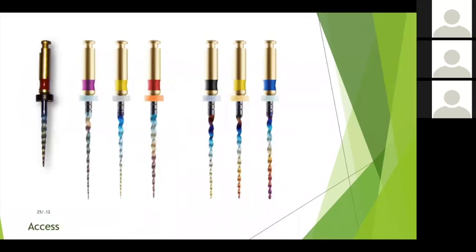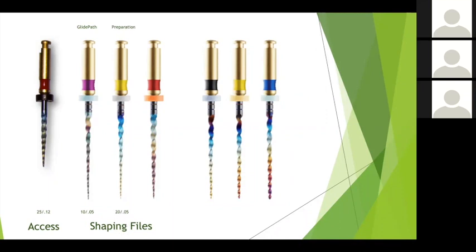The basic file system: the orifice opener is a 25, 12 used in the coronal two-thirds to clear out the coronal portion. I always go 8, 10, and 15 hand files first before putting anything rotary in a tooth. Once I scout the canals, I go in with the access file to open it up and clear debris and pulp tissue. The first rotary file in the system is your glide path file — the 10, 05 — taken straight down to working length after you've established it. You follow that with the 20, 05 preparation file, then finish shaping with the one file, the 25, 08.